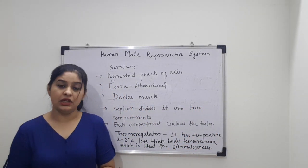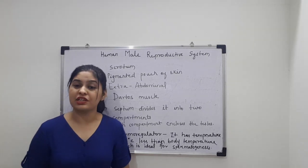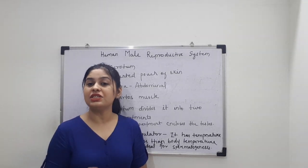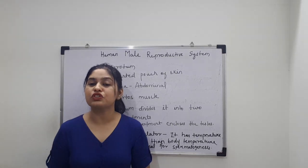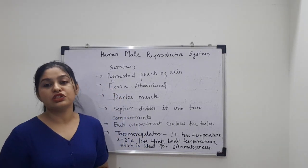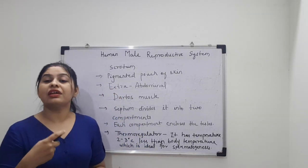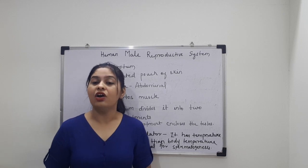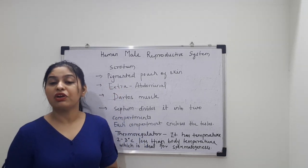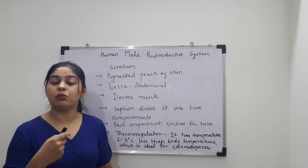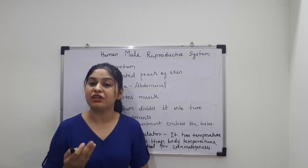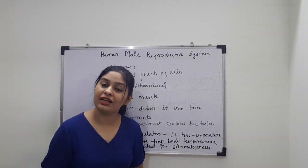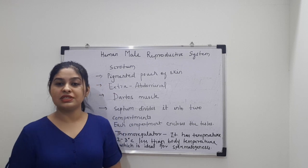So we have already discussed the primary sex organ — the testes — including the longitudinal section, transverse section, and the scrotum. In the next video, I will be discussing the secondary or accessory reproductive organs, covering 5 different ducts and 3 accessory glands. Thank you so much, dear students.